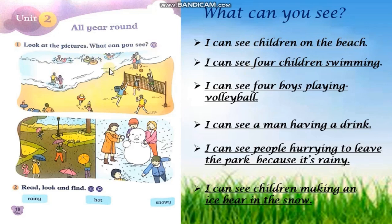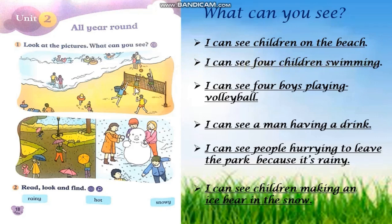Can you see children on the beach? Yes. What are they doing? They are swimming. One, two, three, and four are swimming. And these ones are looking at the children swimming. Let's read again. Number two: I can see four children swimming. How many people are swimming? One, two, three, four. I can see four children swimming.